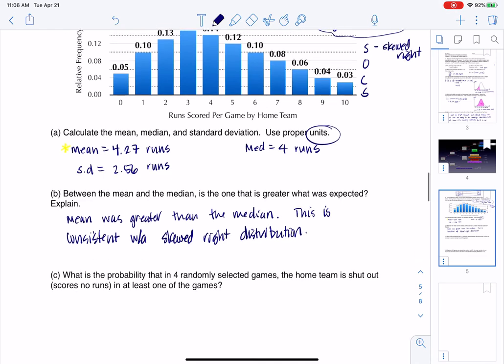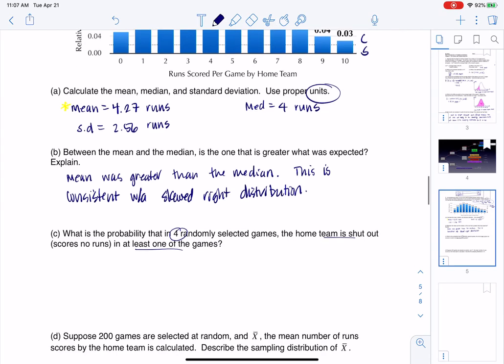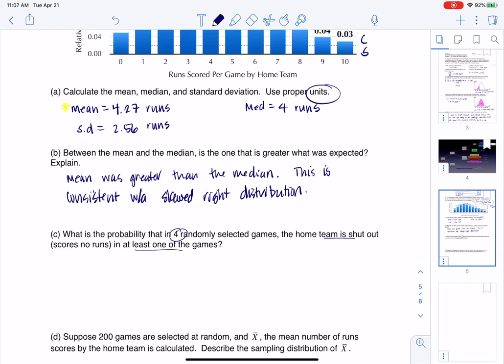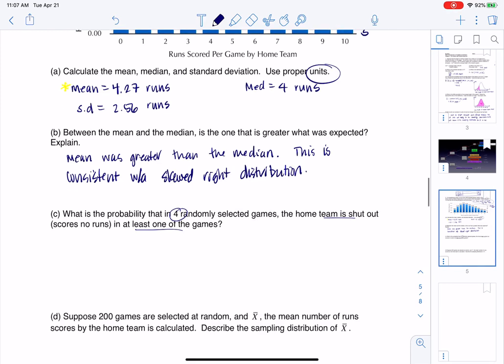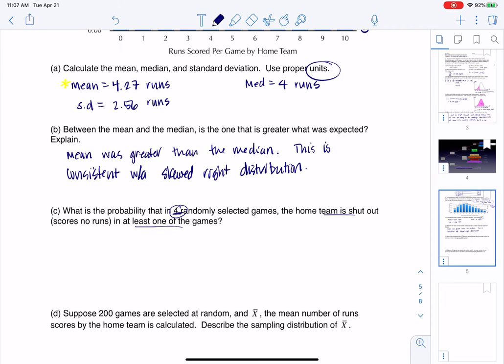And then as we move to C, it says what's the probability that in four randomly selected games, the home team is shut out in at least one of the games. So here we've got a new variable. Our new variable here is, we've got these four games we're looking at, and now we're looking at how many times is the home team shut out. So imagine if you played four games. If I'm going to keep track, our variable changes. It's the number of times the home team is shut out, or I could say number of games home team is shut out.